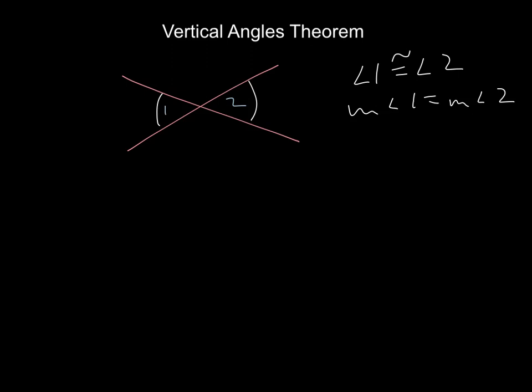Again, let's review. When two lines cross, and I'm going to draw another pair of lines that cross, we have four angles that are formed. And so let's number them: 1, 2, 3, and 4.